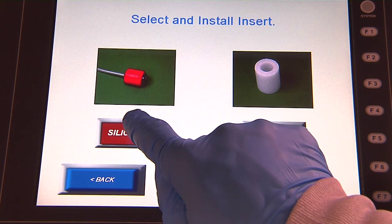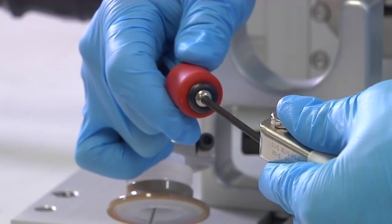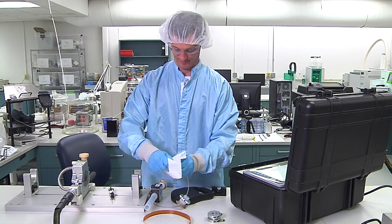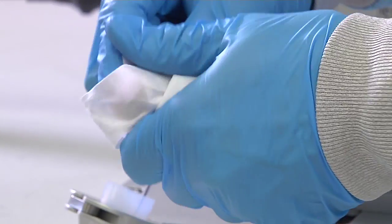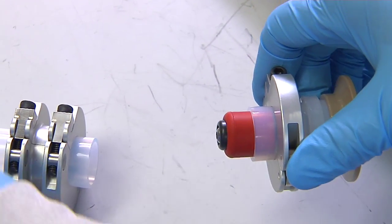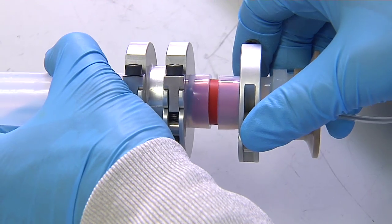Next, select and install the insert. Clean the insert by using a clean, non-shedding wipe with IPA or DI water. Position the insert inside the component to be welded.